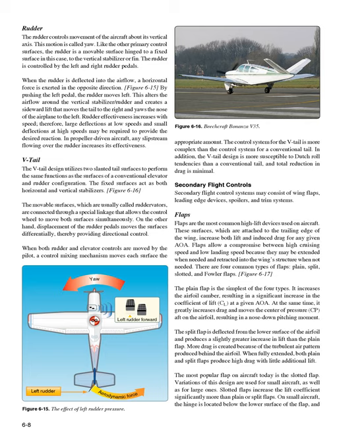The V-tail design utilizes two slanted tail surfaces to perform the same functions as a conventional elevator and rudder configuration—the fixed surfaces act as both horizontal and vertical stabilizers. The movable surfaces, usually called ruddervators, are connected through a special linkage allowing the control wheel to move both surfaces simultaneously, while rudder pedal displacement moves them differentially for directional control. When both rudder and elevator controls are moved, a control mixing mechanism moves each surface the appropriate amount. However, the V-tail control system is more complex than a conventional tail, is more susceptible to Dutch roll tendencies, and total drag reduction is minimal.